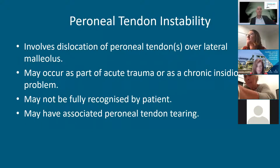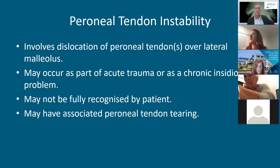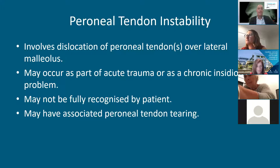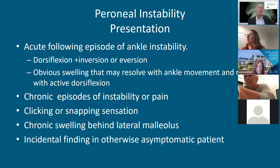Peroneal tendon instability involves dislocation or subluxation of the peroneal tendons over the lateral malleolus. It usually occurs as an acute traumatic event but sometimes the patient may not recognize it — it may be insidious. The patient may not realize they have it and all they'll report is pain or a snapping sensation. We want to identify it because as the tendon flicks over the back of the fibula it can develop a split tear. It usually occurs with an acute episode of ankle instability, so if someone has a bad ankle sprain, think about the peroneal tendons.